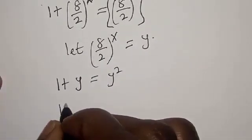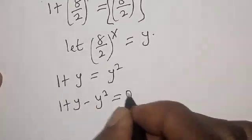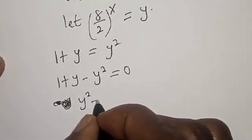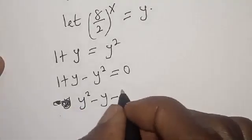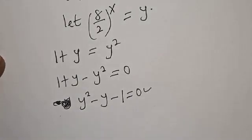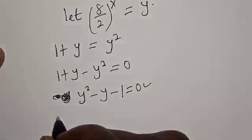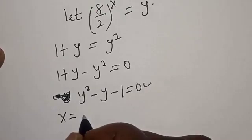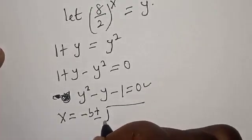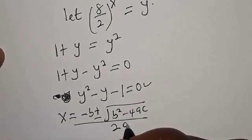Now we have 1 plus y minus y squared equals 0. Let's rearrange: y squared minus y minus 1 equals 0. This is a quadratic equation. Let's solve this using the quadratic general formula: y equals minus b plus or minus square root of b squared minus 4ac, over 2a.